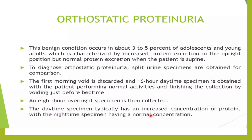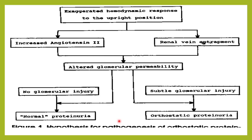To diagnose orthostatic proteinuria, we collect split urine samples. In the daytime when the patient is active and in an upright or orthostatic position, we will get protein in that specimen. Whereas in the nighttime specimen — an 8-hour overnight collection when the patient is lying down supine — there will be normal protein excretion. The cause may be an exaggerated hemodynamic response when the patient is upright, leading to increased angiotensin II.